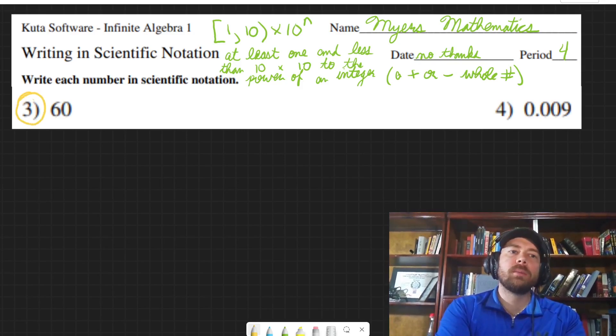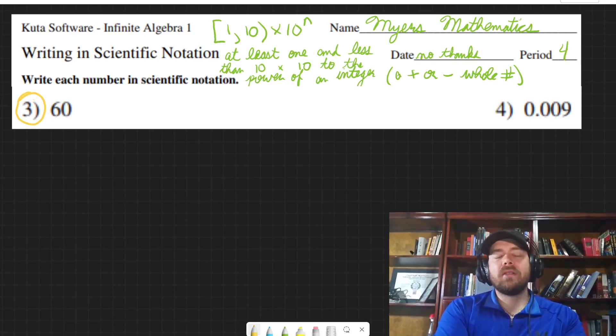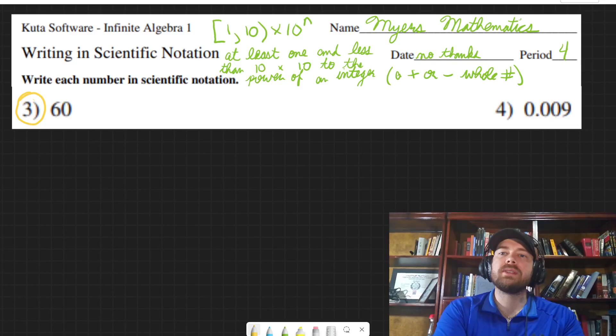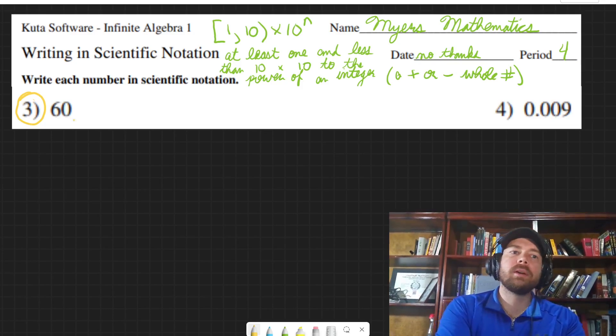So number three, we need to write the number in scientific notation. It has to be a number that's at least one and less than ten, times ten to the power of some sort of integer - positive or negative whole number, if you prefer to call it that. The decimal point is going to be right there. If you don't see it...